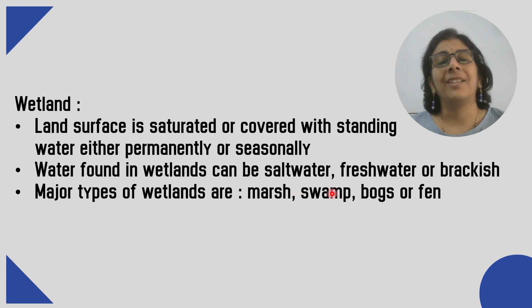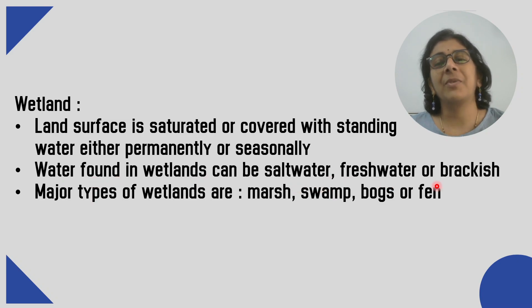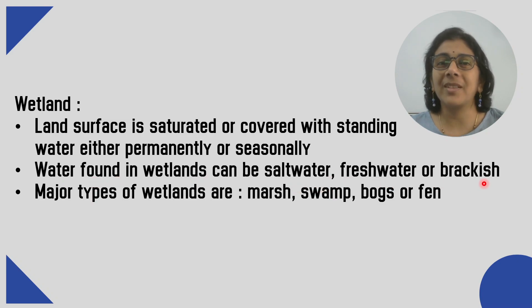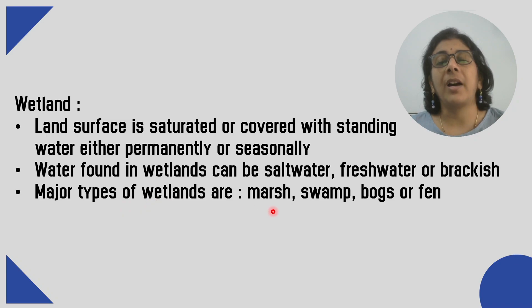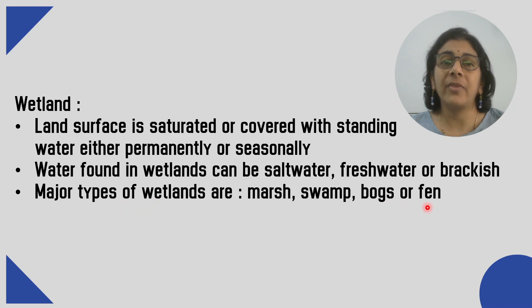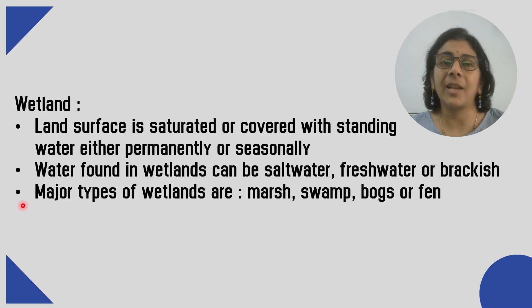The water in a wetland can be salt water, fresh water, or brackish water. The types of wetlands are marsh, swamp, bogs, and fen.